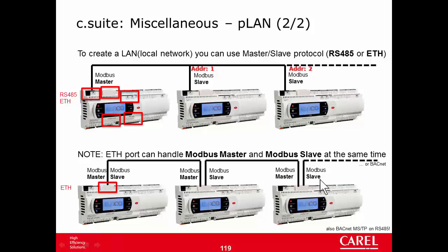This creates a real multi-master network where each device can send and receive variables from any other device. The wiring is also very simple because this controller has two Ethernet ports, so you can connect it to one controller on one port and to another controller on the other port in a basic chain structure. On the Ethernet port, you can also use BACnet TCP.